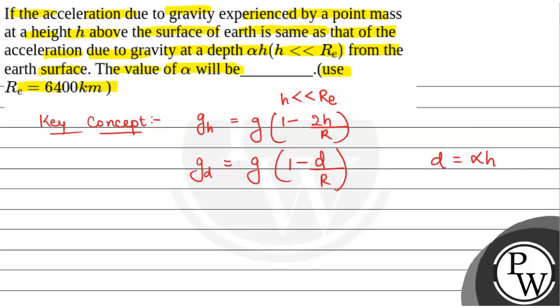So we have been given that g at height h is equal to g at depth equals alpha h.